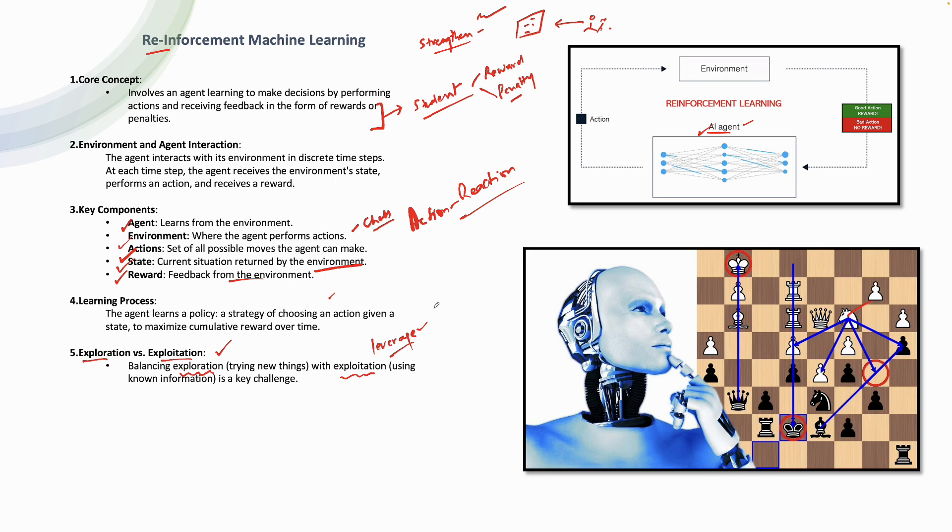You need to have a balance. It can't be that you're just simply trying new things. If you're trying, then we are talking about a lot of trial and error. If there's trial and error happening, maybe you don't have an accurate machine learning algorithm or your model. So you need to balance it out. You need to balance your exploration where you're trying new things and you're exploiting as well. You're using the existing known information, which is a key challenge.